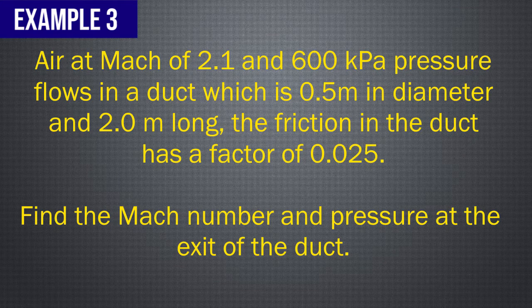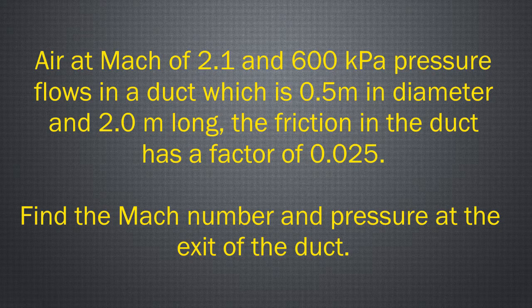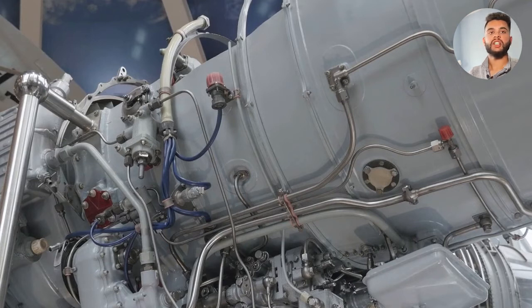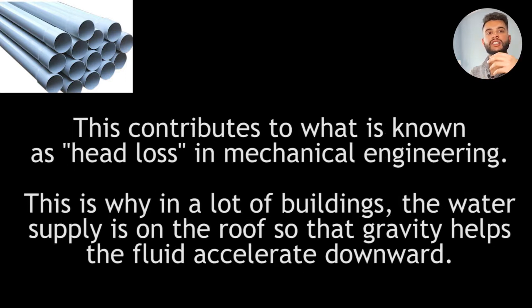Air at Mach of 2.1 and 600 kilopascals pressure flows in a duct which is 0.5 meters in diameter and 2 meters long. The friction in the duct has a factor of 0.025. Find the Mach number and pressure at the exit of the duct. For the next question we have flow at friction and this question is very interesting because let's say you design an aircraft and you have a cabin, you need to know that pipes and any metal ducts they have a friction factor which means that when fluid flows in a pipe it loses some momentum.